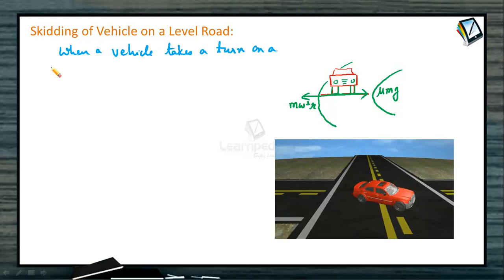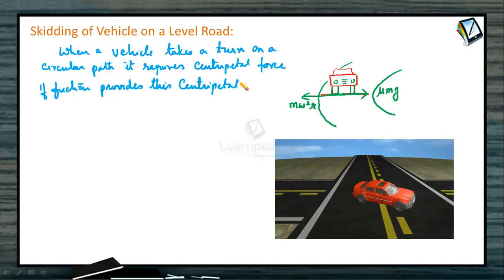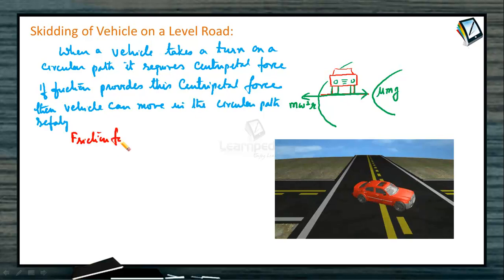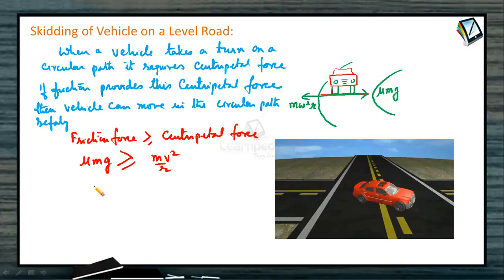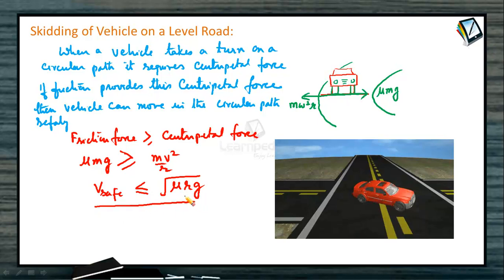Whenever a vehicle takes a turn on a circular path it requires centripetal force. If friction provides this centripetal force, the vehicle can move in the circular path safely. The friction force must be greater than or equal to the required centripetal force — that means μmg, or μ into normal reaction, must be greater than or equal to mv²/r. So the safe speed must be less than or equal to √(μrg). This is the maximum speed by which a vehicle can take a turn on a circular path of radius r, where μ is the coefficient of friction.